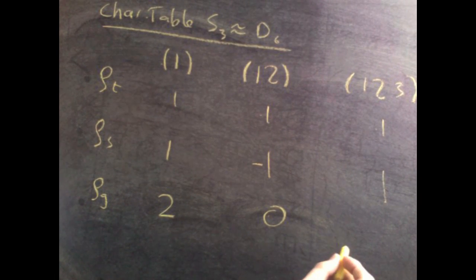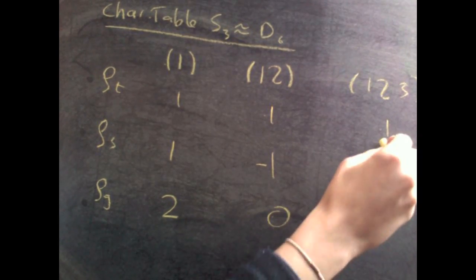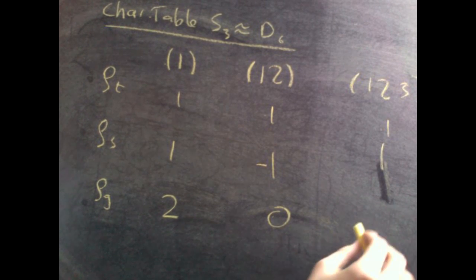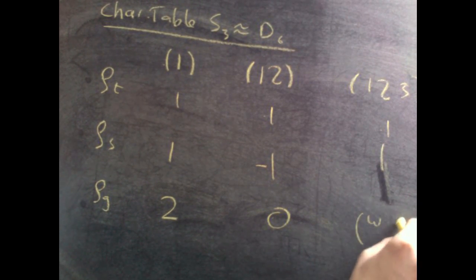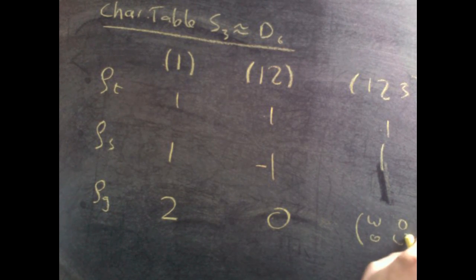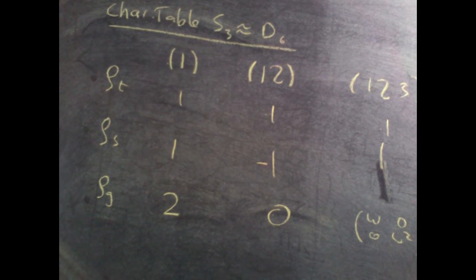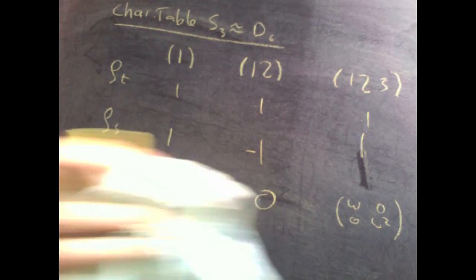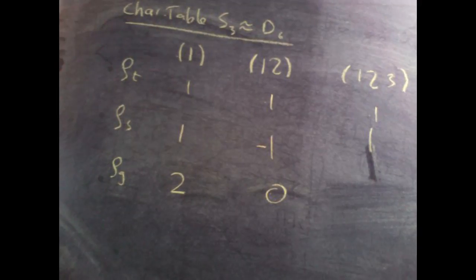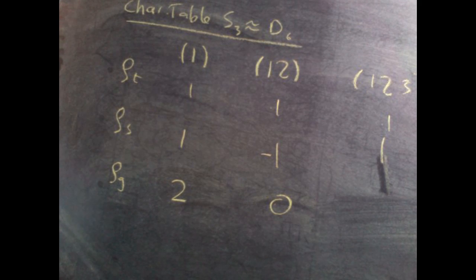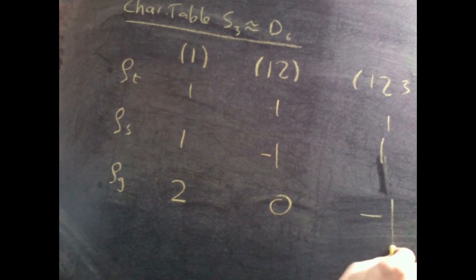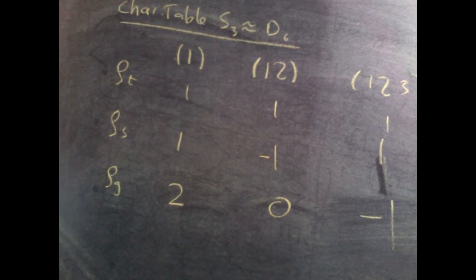And the final step, slightly out of place, is rho g sent the rotation to that matrix. We just showed it. And the trace of that matrix is omega plus omega squared, which, as we just said, is minus 1. So, that's the character table for S3 and D6.